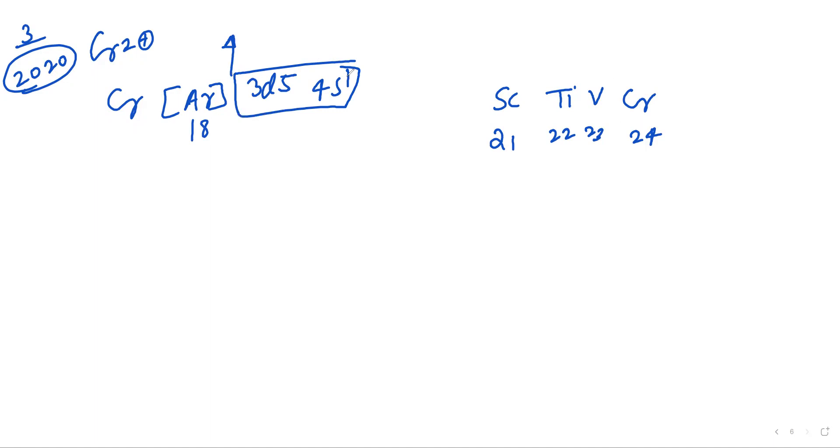For Cr 2 plus, after losing 2 electrons, it becomes argon 3d4, 4s0. Number of unpaired electrons will be 4. Then n equals 4.